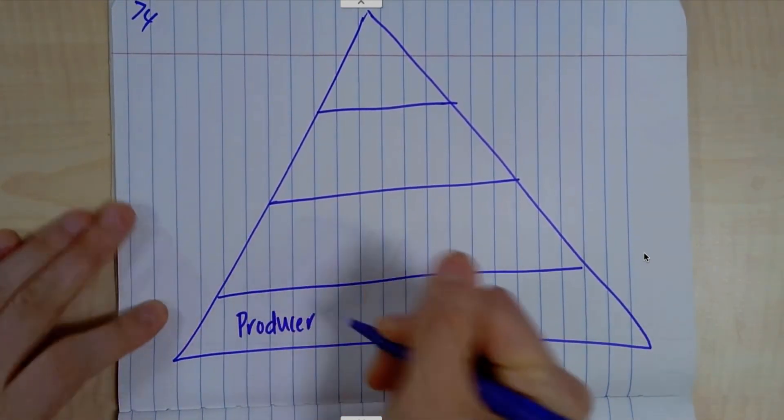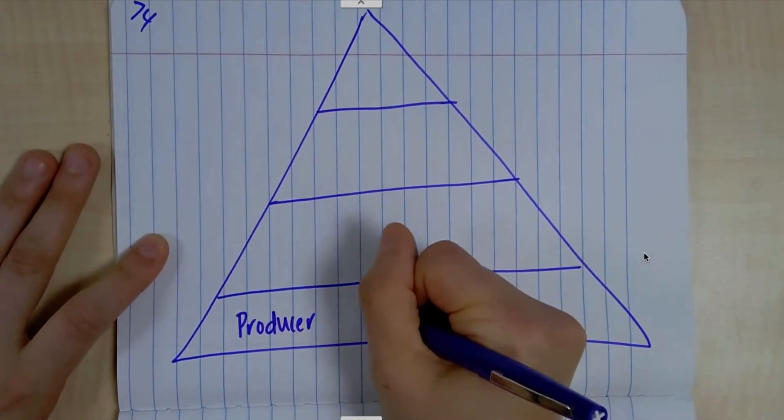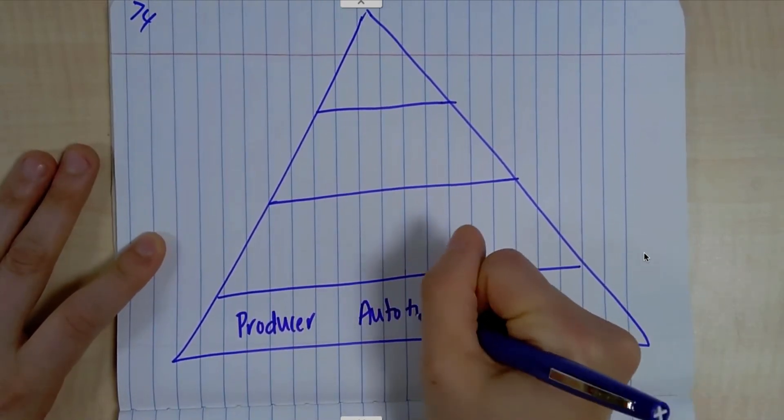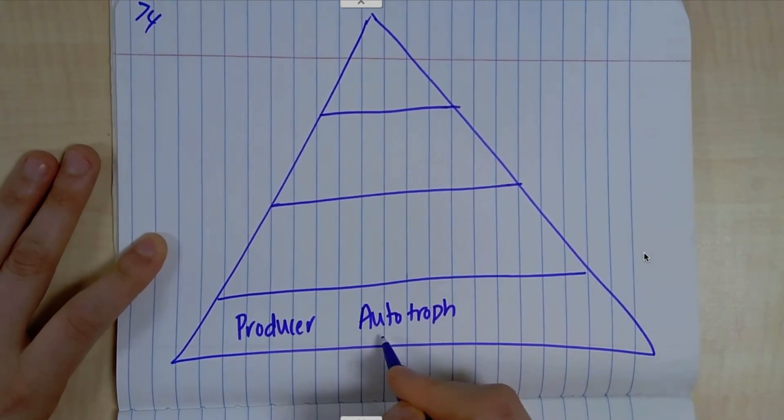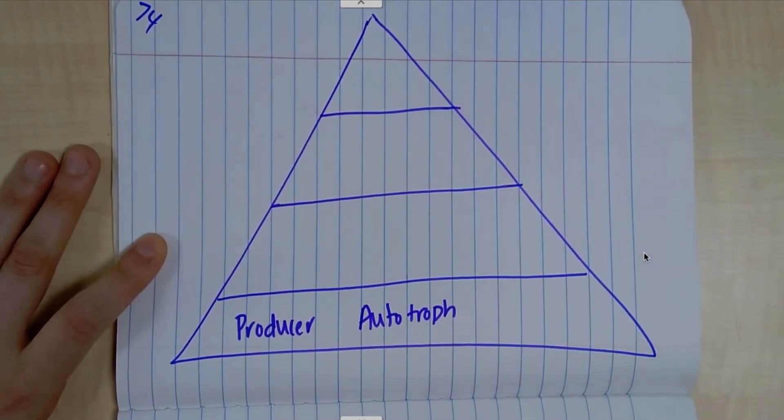So I'm writing producer. Another name for a producer is an autotroph, because in autotroph, auto means self, and troph, like these trophic levels, has to do with feeding. So an autotroph and a producer are the same thing.